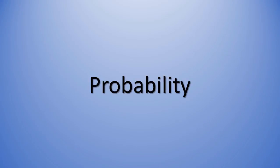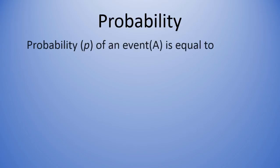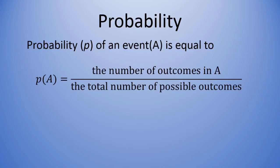Here we'll take a look at probability. The probability, or P, of an event A is equal to P of A, that is the probability of A, equals the number of outcomes in A over the total number of possible outcomes.